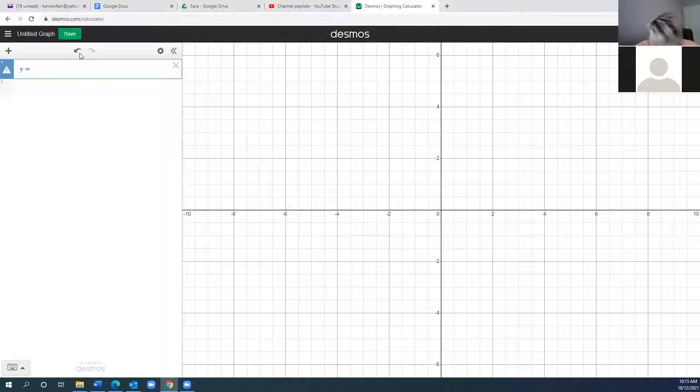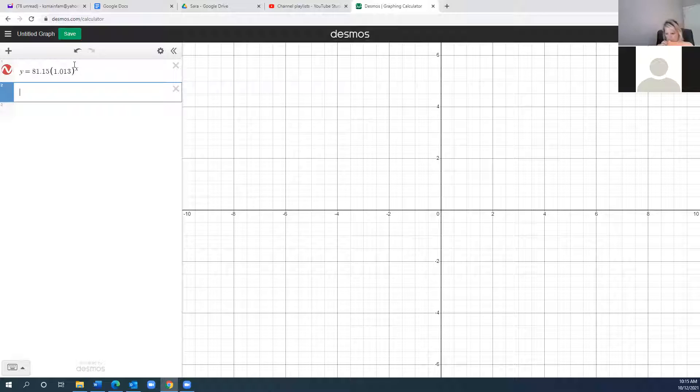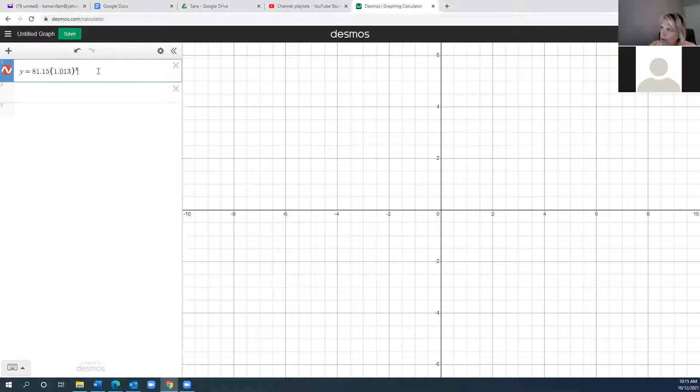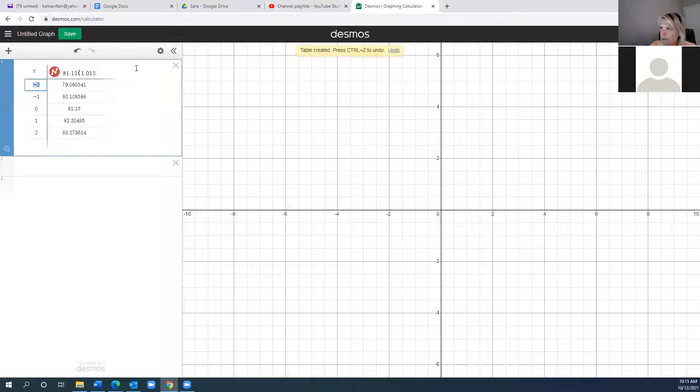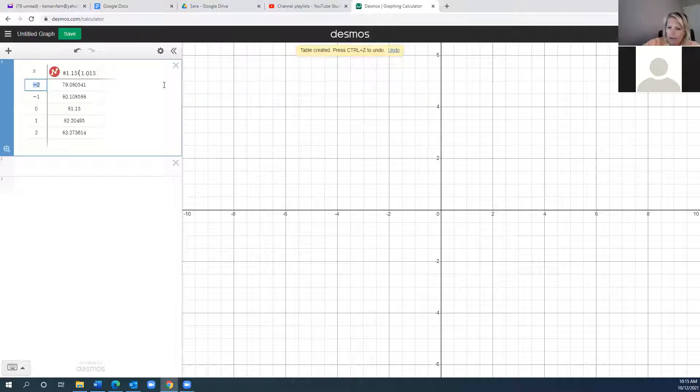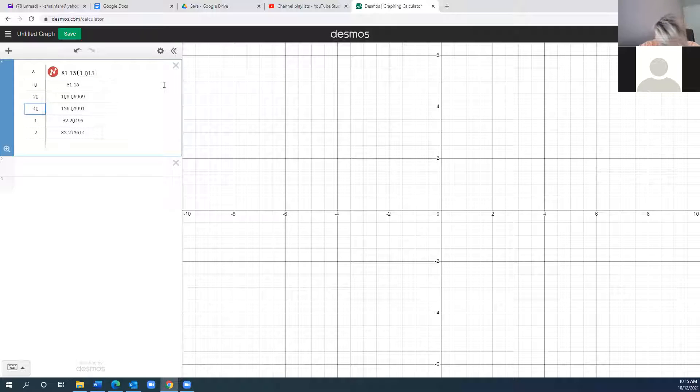It says use the function in question one to complete the table, then use the table to draw a graph. We can actually do all in Desmos. So let's go to Desmos and type in our equation. Y1 equals 81.15 times 1.013 to the x. Now on that one, I'm going to click and go to my gear and make the table. My table, I want to have zero. I'm just going to go over the negative two and negative one because we don't need any negative values. I'm going to copy over and do 0, 20, and then arrow down so it just replaces them 60, 80, and 100.